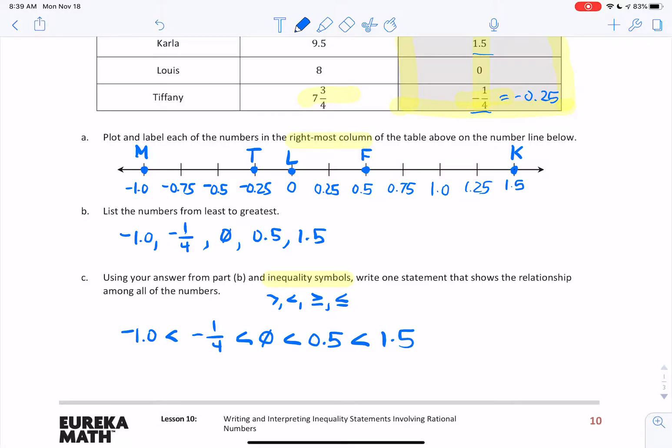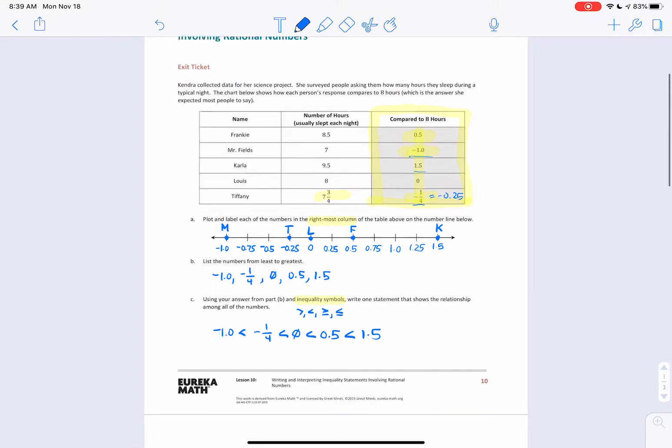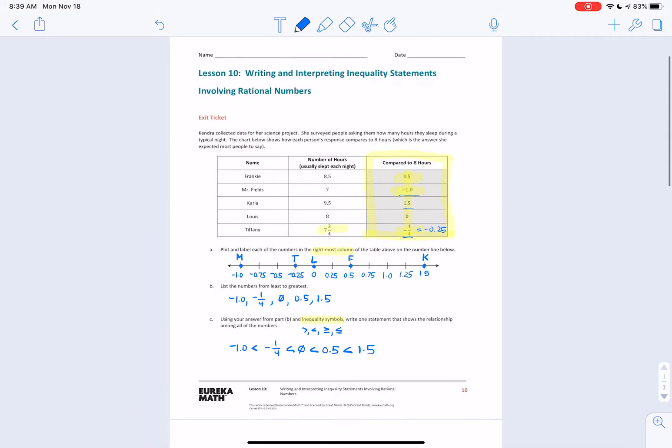And that's all there is to it. So here we did Lesson 10. This is module 3, lesson 10: writing and interpreting inequality statements involving rational numbers. We ended up doing it down on C, but this problem walks us through. We took some real-world information,